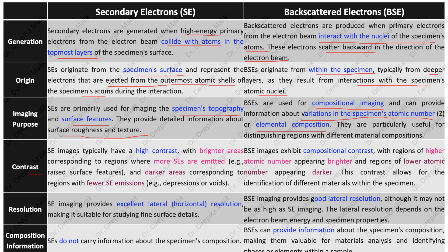Regarding contrast: secondary electron images typically have high contrast, with brighter areas corresponding to regions where more secondary electrons are emitted — such as raised surface features — and darker areas corresponding to regions with fewer secondary electron emissions, such as depressions or voids. Backscattered electron images exhibit compositional contrast, with regions of higher atomic number appearing brighter and lower atomic number appearing darker, allowing identification of different materials within the specimen.